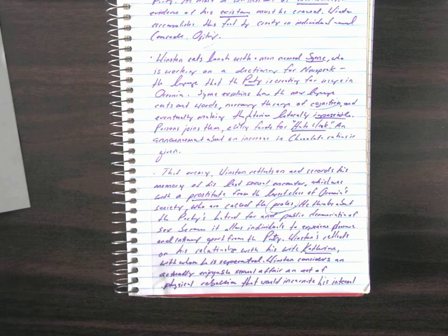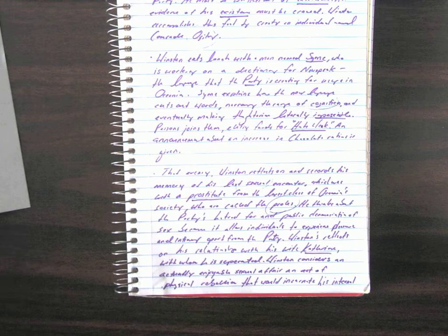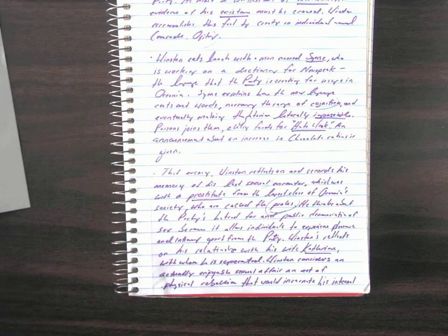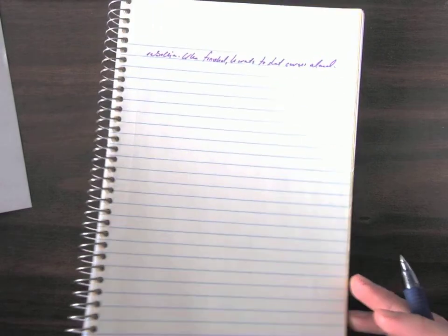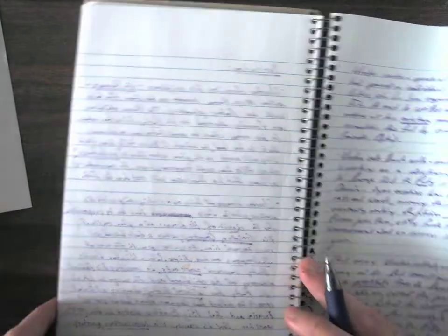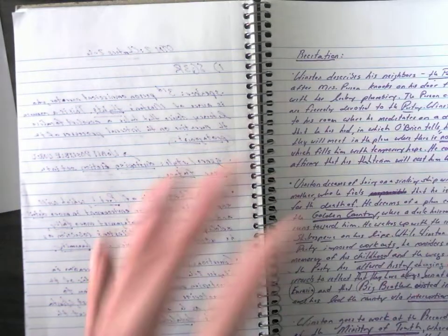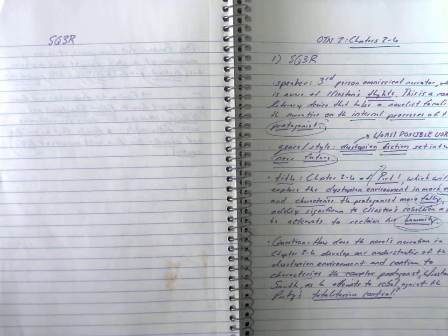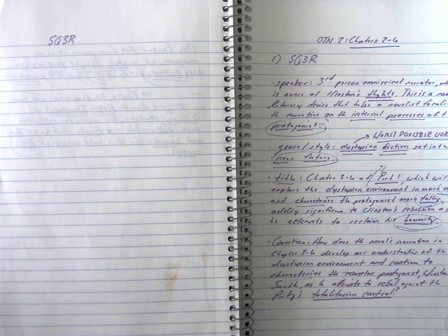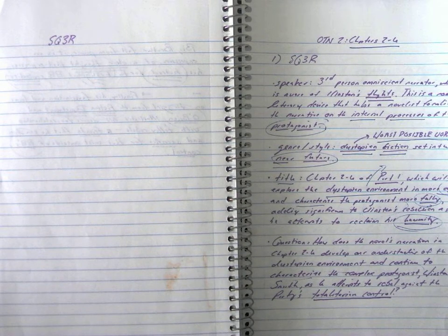And then, finally, Winston concludes that an enjoyable sexual affair, something that brings two individuals together in mutual delight, in mutual and intimate connection with one another, would be a physical rebellion that would incarnate his internal rebellion against the party. This obviously foreshadows his relationship, his romantic relationship with Julia, the girl from the fiction department. So, tomorrow, we're going to be analyzing a number of key points from these chapters. Today, we just simply summarized what happened. Hopefully, that gave you a clearer picture of what you were reading last week. And then, tomorrow, we're going to get an even more detailed snapshot of what Orwell means when he's describing all these things. Hope you have a great day.